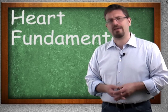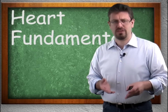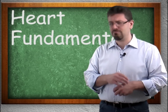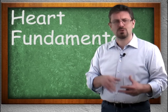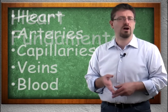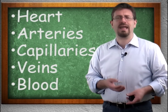The cardiovascular system's primary purpose is to supply body cells with nutrient materials and carry away waste products. It's a closed circuit system — self-contained. We don't want blood spurting out of our bodies. It's composed of things like the heart, arteries, capillaries, veins, and blood.